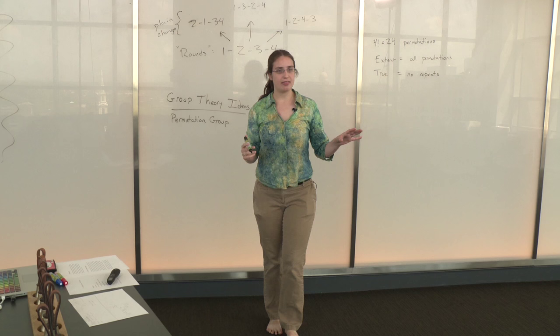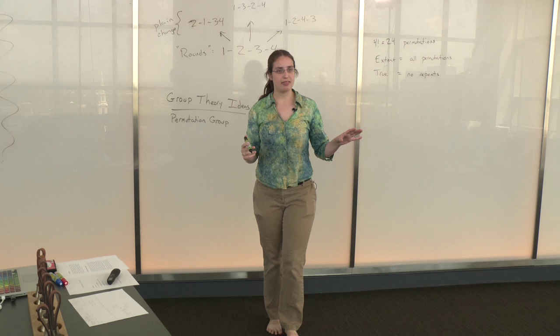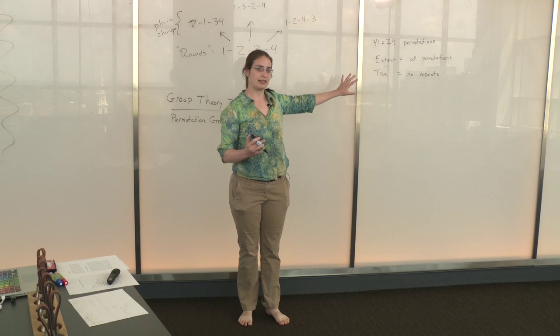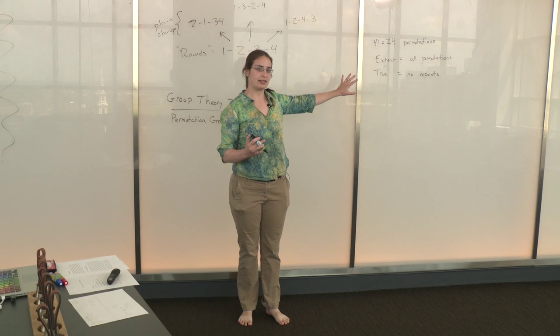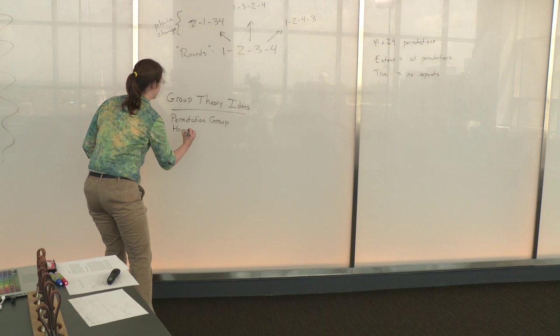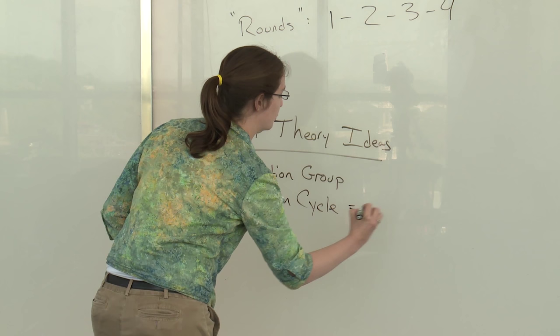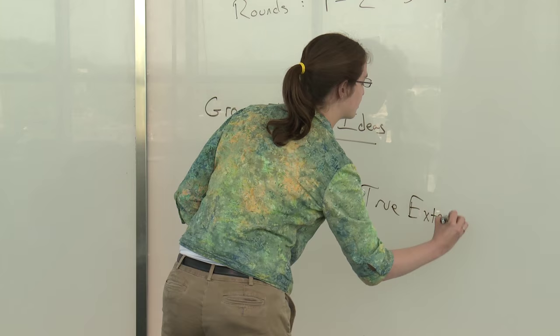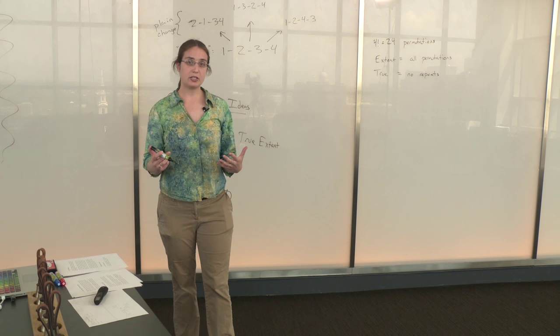Now it turns out that there's a group theoretical concept which is very much the same as these concepts that we're going for in change ringing, and that's called a Hamiltonian cycle. In a Hamiltonian cycle, it's exactly a path through every member of a group hitting each one exactly once and beginning and ending in the same place, in our case in rounds. So a Hamiltonian cycle in group theory is a true extent in change ringing.